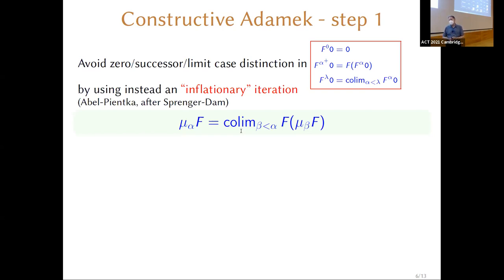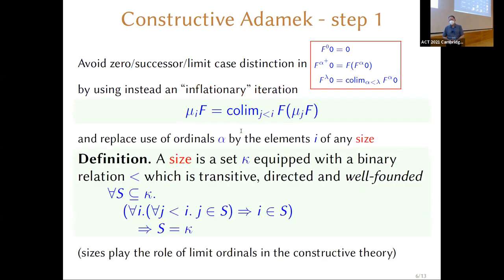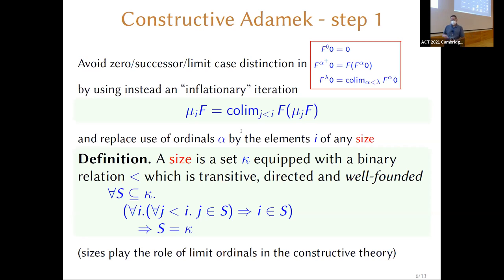A size is just a set equipped with a relation of less-than. We need that relation to be transitive, directed — meaning any finite set of sizes has an upper bound — and crucially well-founded. You can't state well-foundedness constructively as the absence of infinite descending chains; that's not constructively strong enough. You have to state it positively, as an induction principle.